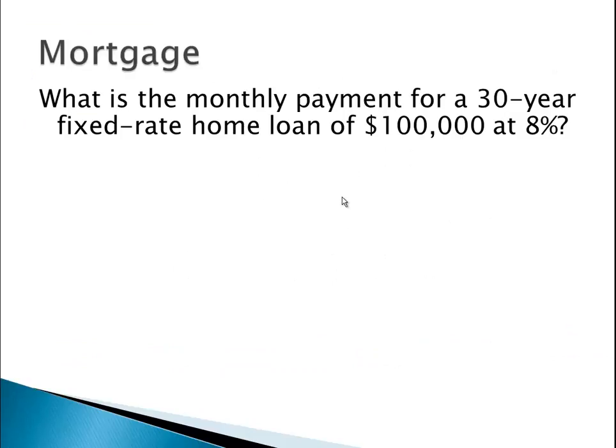The example we're working with here is calculating the monthly payment for a 30-year fixed rate home loan of $100,000 at an interest rate of 8%. I know 8% in 2014 is not really applicable, but just using it for an example. The key thing I want to look at is this fixed rate — that basically means this rate of 8% is going to be the same for the whole 30-year period.